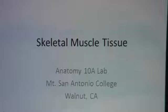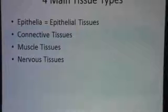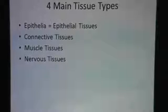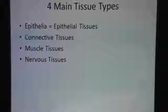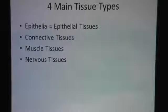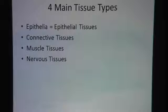Skeletal muscle tissue. This video is made from the Anatomy 10 day lab at Mount San Antonio College. Let's review — there are four main tissue types in the human body: epithelial tissues, connective tissues, muscle tissues, and nervous tissue. Because we're talking about skeletal tissue, we're going to zoom in on muscle tissues.